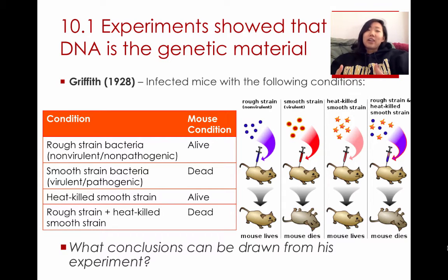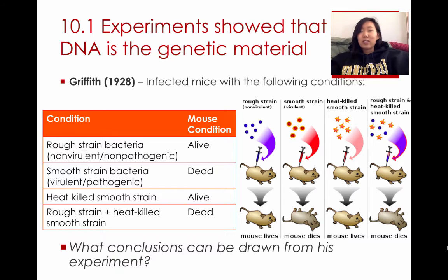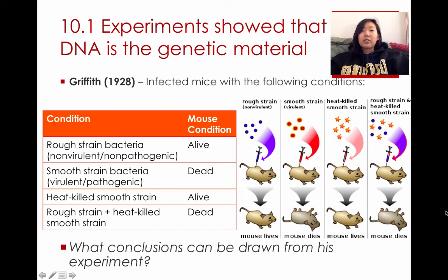We know now that DNA is the source of genetic material, but that was actually a very difficult thing for scientists to discover, and it's actually a very recent discovery within the past century, partly just because DNA is so small and you can't really look at it through the microscope. The first experiment that really made a difference in our understanding of genetic material was done by a man named Griffith in 1928.